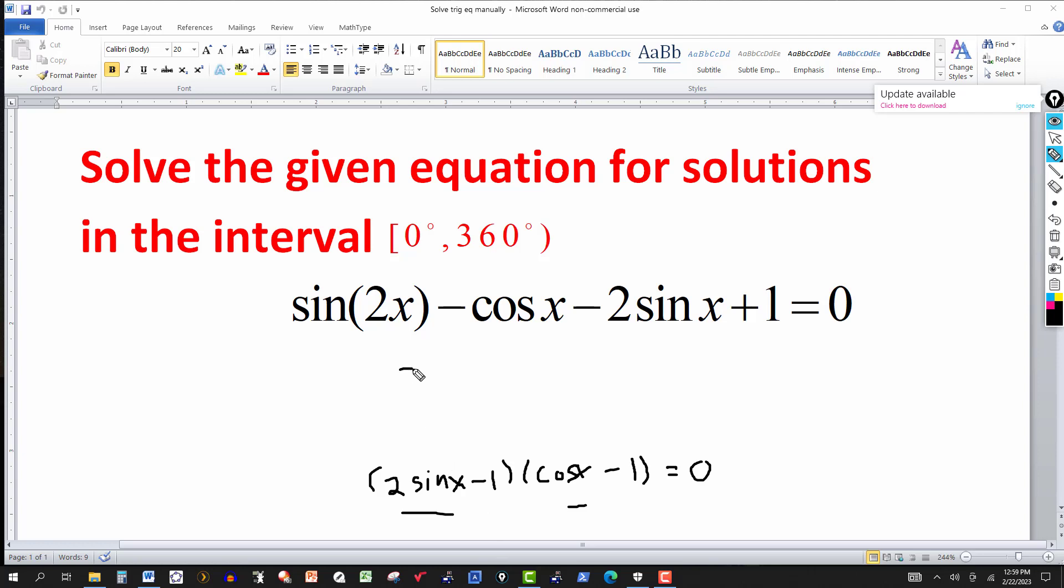I take the first factor, this will be two sine of x minus one equal to zero. And then take the second factor, set it equal to zero, cosine of x minus one equal to zero.